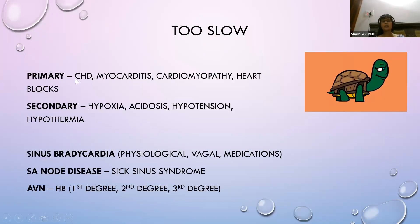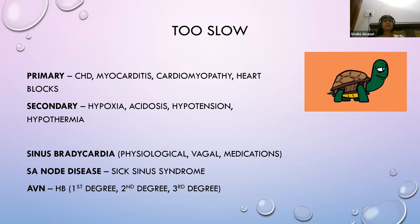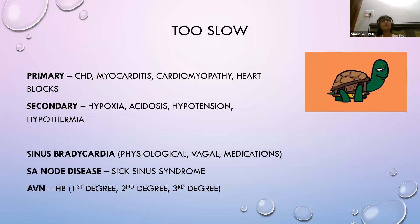For slow rhythms: these can be primary (cardiac causes like myocarditis, cardiomyopathy, heart block) or secondary (non-cardiac causes like hypoxia, acidosis, hypotension). The problem may lie in the SA node or AV node. SA node dysfunction includes sick sinus syndrome, where the SA node is working but not properly - causing tachycardia-bradycardia alternation.